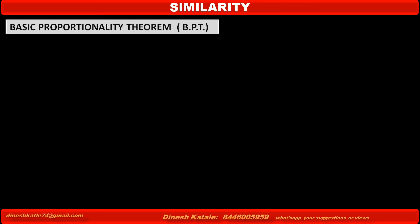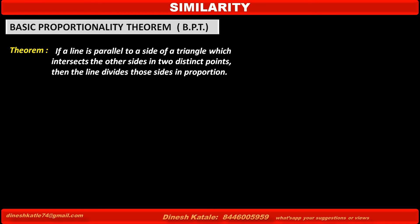What is the Basic Proportionality Theorem? First, see the statement of this theorem. If a line is parallel to a side of a triangle which intersects the other sides in two distinct points, then the line divides those sides in proportion. In other words, if a line is parallel to one side of a triangle and intersects the other two sides in two distinct points, then we have to prove that the line divides those two sides in the same ratio.